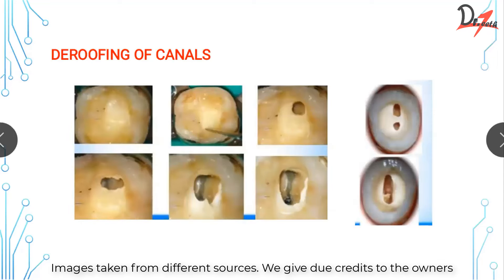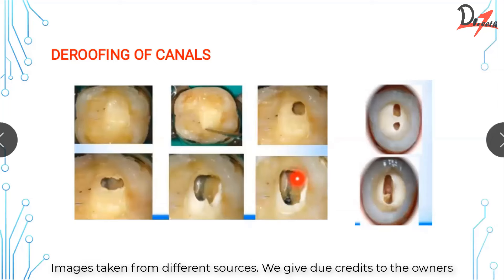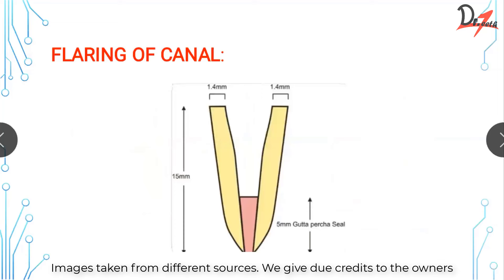Regarding de-roofing: a common mistake is to locate one or two canals and stop there. You need to do complete de-roofing to get the dentine map. You must extend and cut the dentine in between so that if there's a possibility of a canal in between — with so many variations like mid-mesials — your map will be complete. De-roofing is achieved with the endo-Z bur — the one with a non-cutting tip — which helps a lot in the de-roofing process.